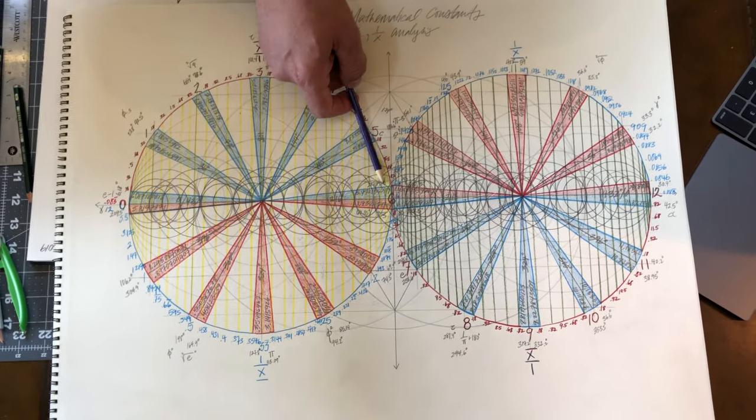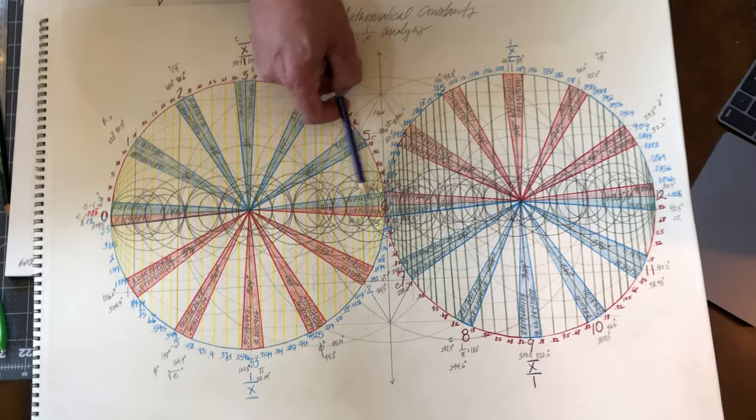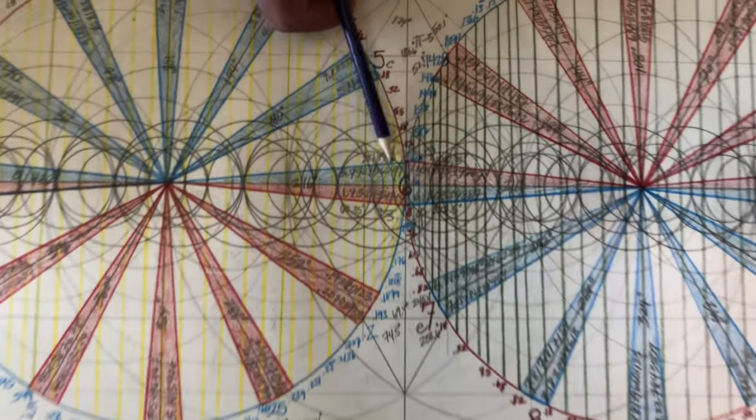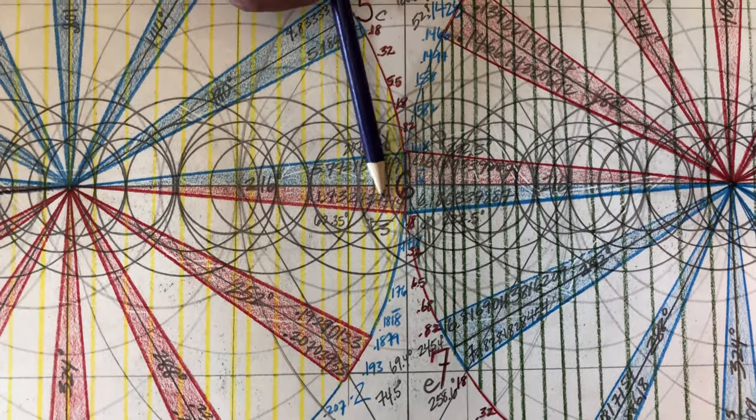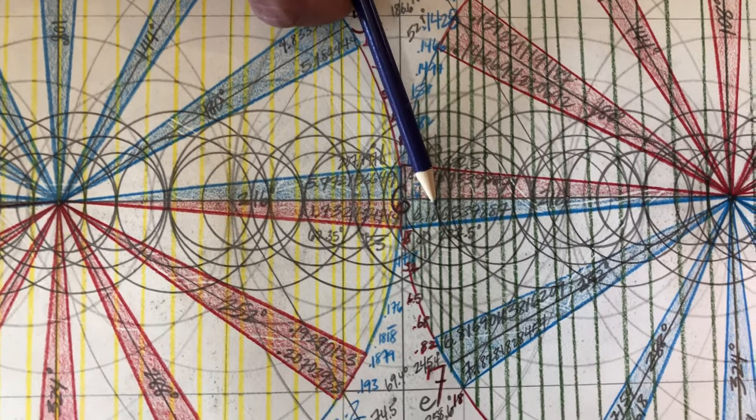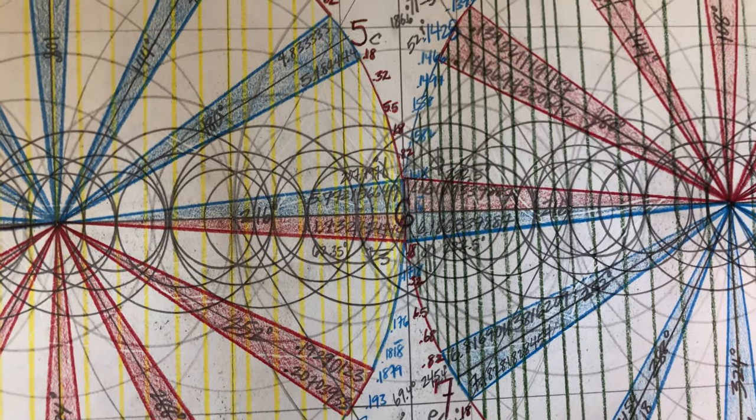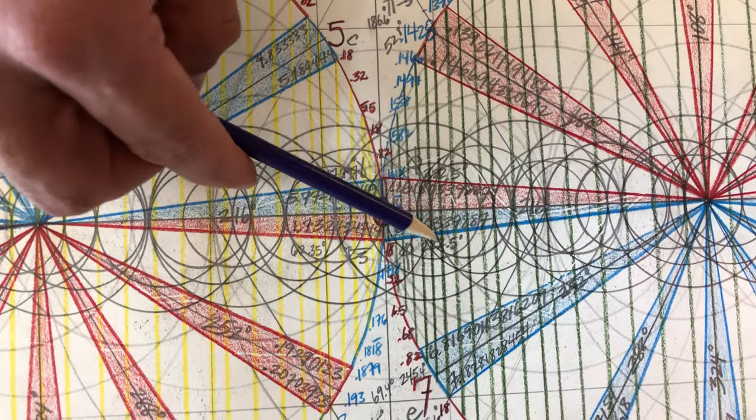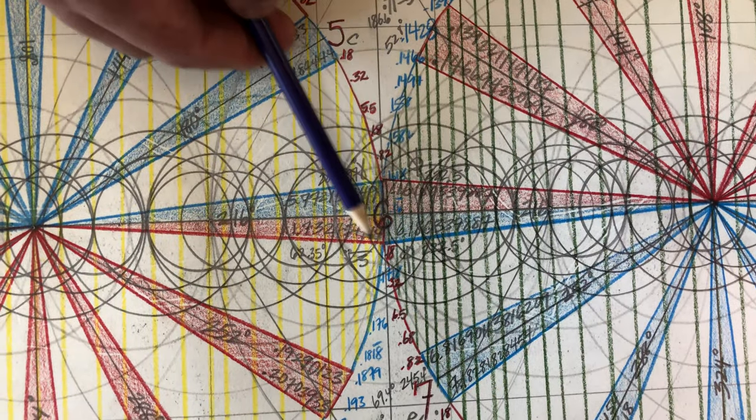We have the same thing with gamma, which is the Euler-Mascheroni number here at 0.5772, and then it would be 6.180339887, which is phi. So gamma and phi, and that's the boundary condition on the number six.